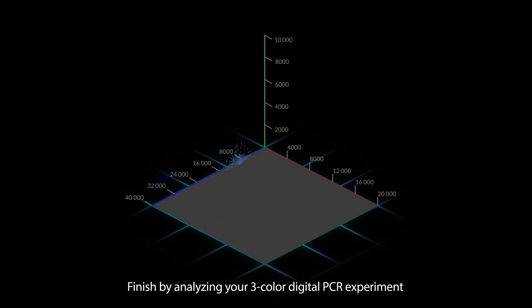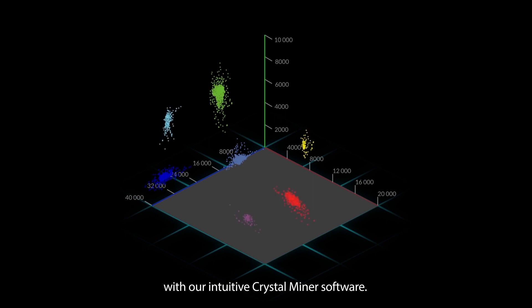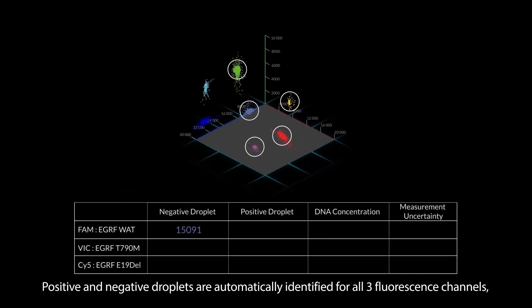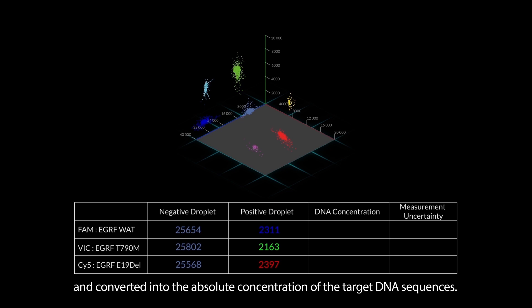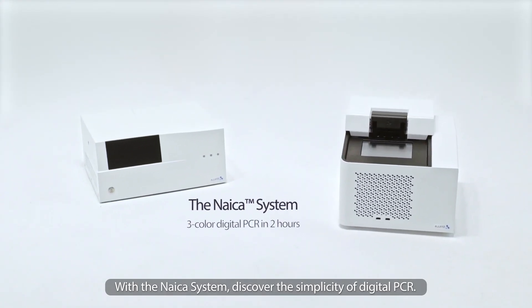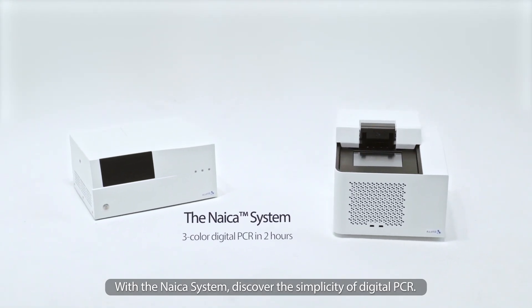Finish by analyzing your three-color digital PCR experiment with our intuitive CrystalMiner software. Positive and negative droplets are automatically identified for all three fluorescence channels. The number of droplets are counted in each population and converted into the absolute concentration of the target DNA sequences. With the NICA system, discover the simplicity of digital PCR.